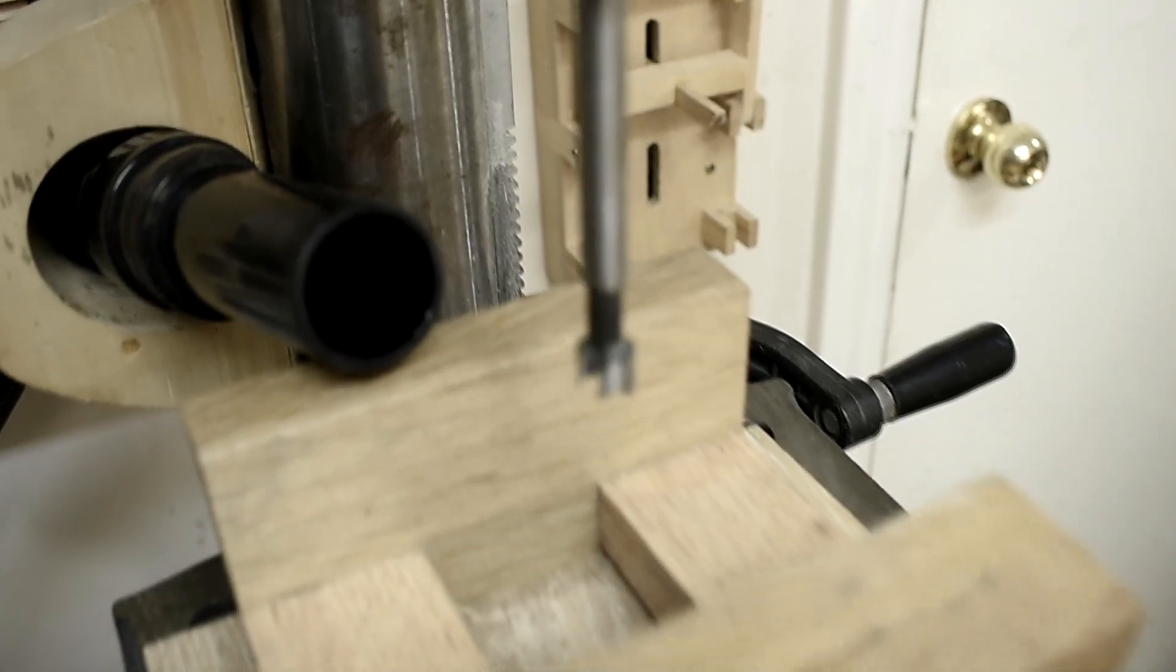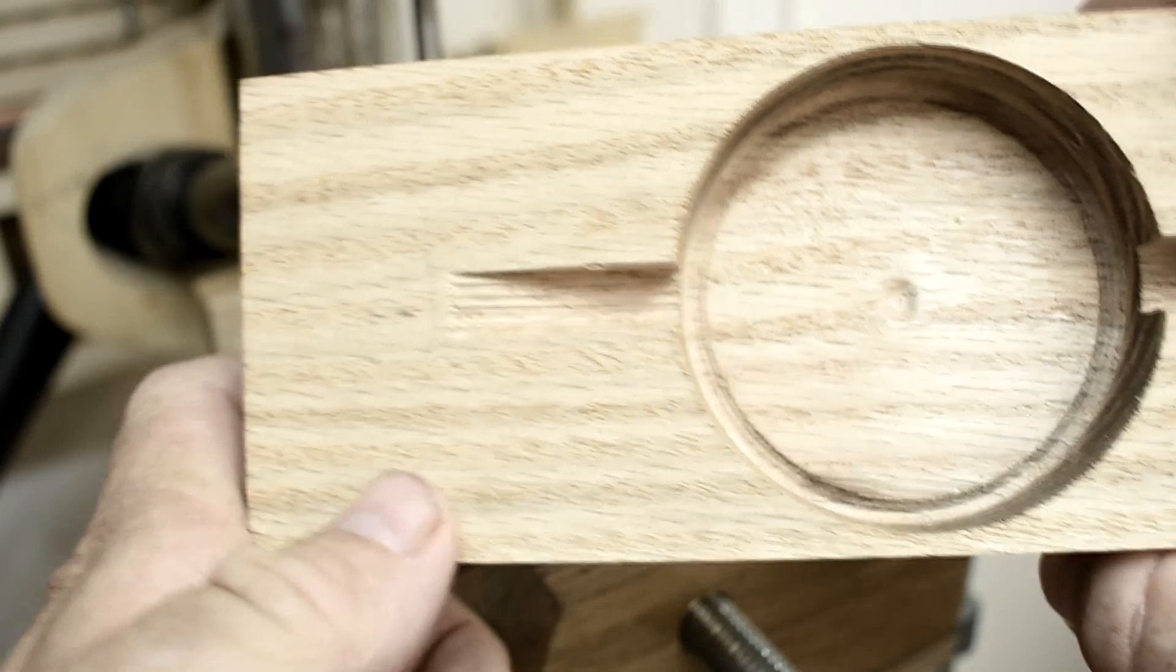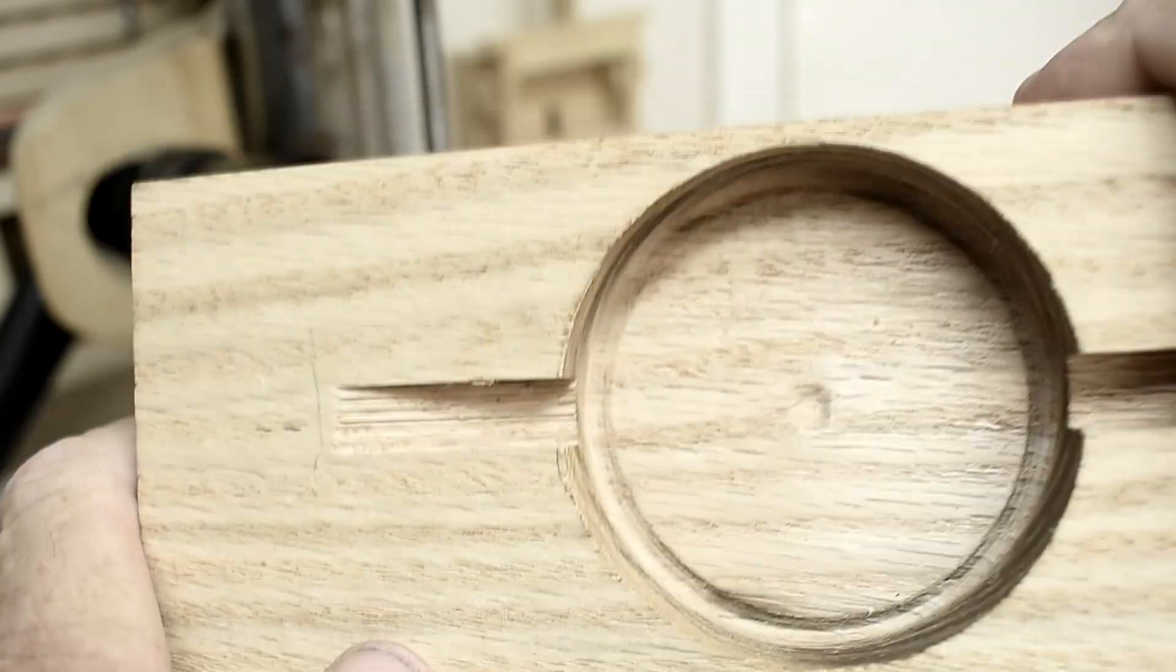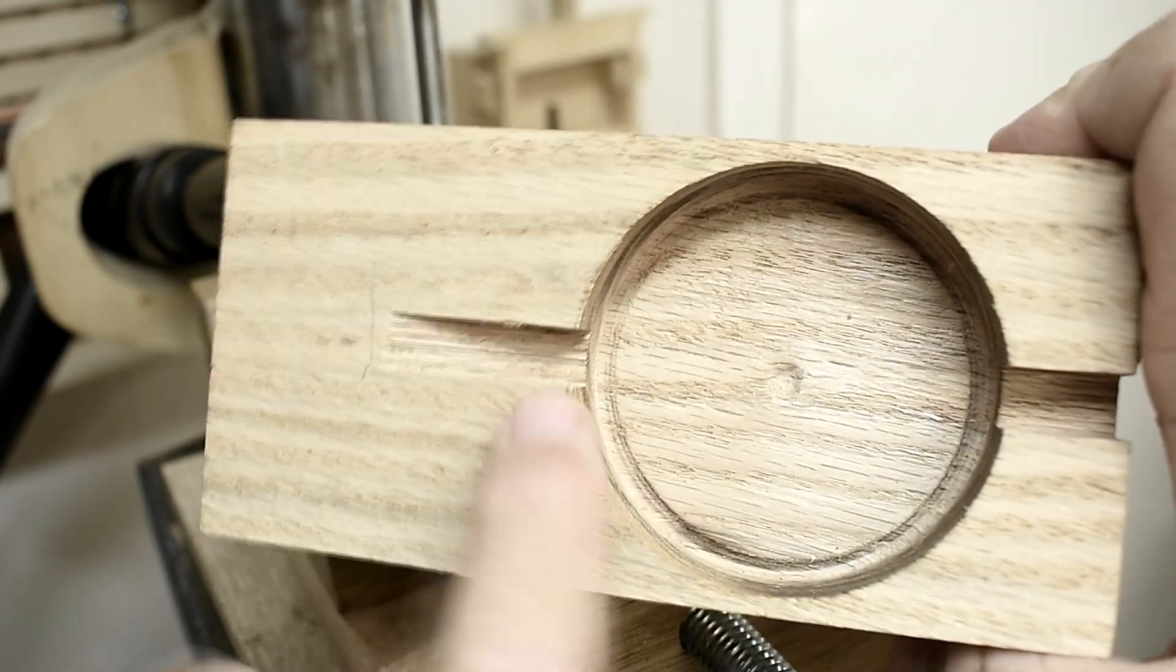So now I'm going to use this tiny Forstner bit and that'll be used to drill out this end of the block.